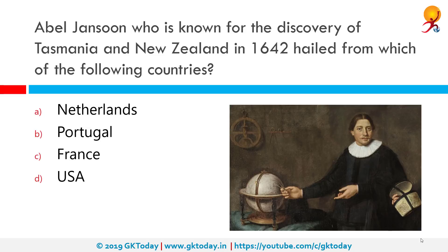Abel Janszoon, who is known for the discovery of Tasmania and New Zealand in 1642, came from which of the following countries? The correct answer is Netherlands. Abel Janszoon Tasman was a Dutch seafarer, explorer, and merchant best known for his voyages between 1642 and 1644 in the service of the Dutch East India Company. He was the first known European explorer to reach the islands of Van Diemen's Land and New Zealand, and to sight the Fiji Islands.